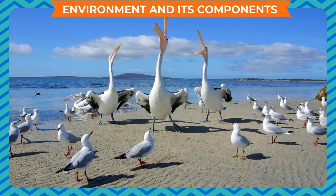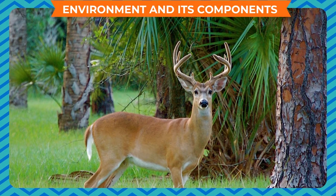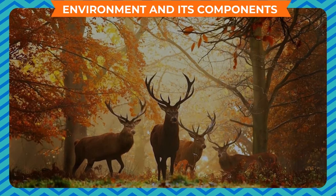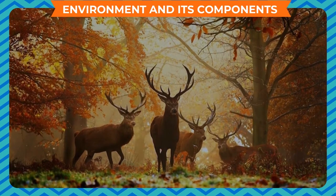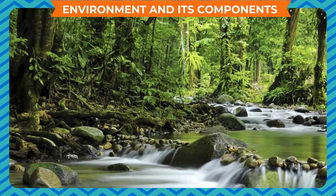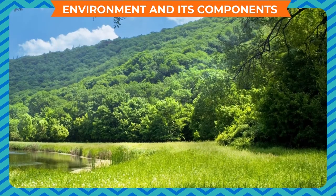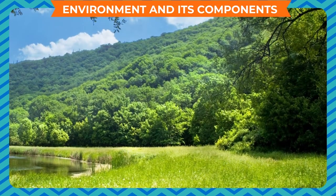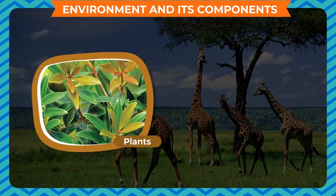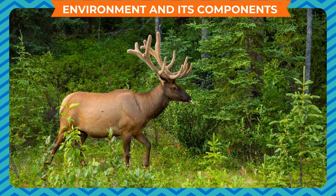Everything surrounding and affecting an organism is known as its environment. The study of the relationship between living things and their environment is called Ecology. Our environment is made up of biotic and abiotic components, and all of them interact with each other. The biotic components include all living organisms — plants, animals and microorganisms — which constitute the biotic and biological environment.